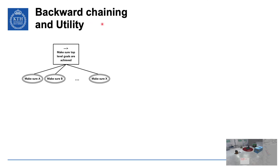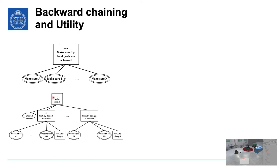We talked about backward chaining in earlier videos. How does that combine with utility theory? In backward chaining you start with a top-level goal, have a subtree achieving it by doing other actions, and recursively replace condition checks with subtrees achieving those conditions. If we're achieving goal X either by doing Y or doing Z, the order between these is somewhat arbitrary, so we can use utility to reorder subtrees that all achieve X.